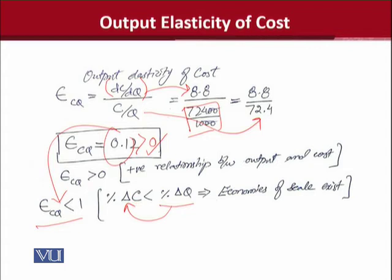Aur yeh bara famous economic concept hai, ke agar hamari output, increase ho, aur hamari cost mein increase, us proportion se na ho, to hum kehte hain, ke hamari production mein, economies of scale exist karti hain. And that can also be seen in the diagram. But, aap ne yeh dekha, ke hum ne mathematical tools ko use kar ke, is cheez ko discover kia, ke kya is firm mein, at this stage, economies of scale exist karti hain, ya nahi. So in this case, they exist.